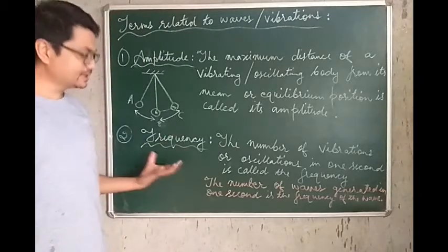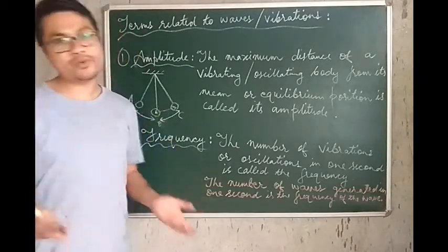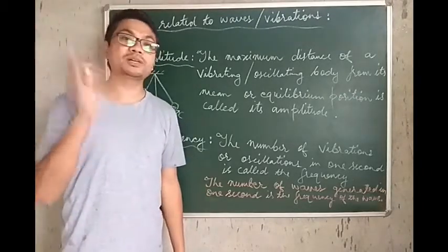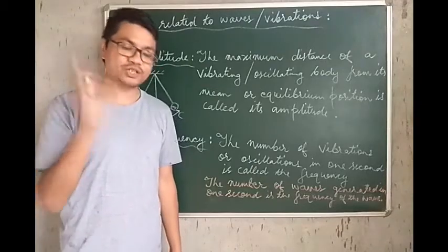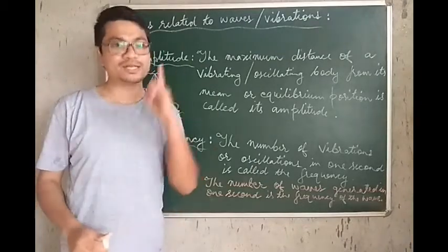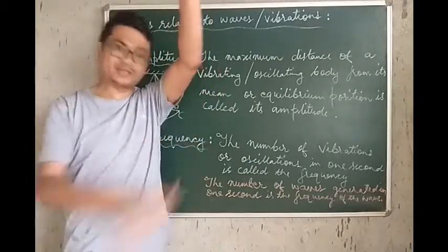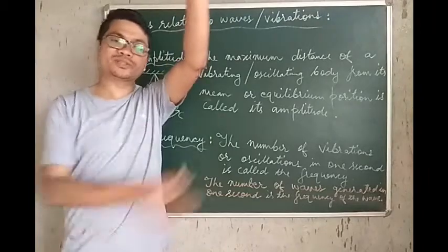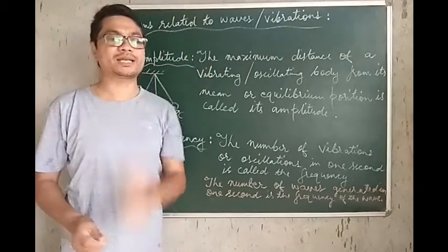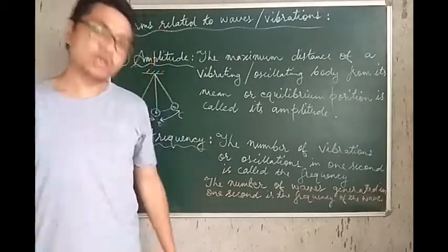The second thing is frequency. For a vibrating body, frequency is the number of complete vibrations in one second. For an oscillating body, the number of complete oscillations in one second is what is called the frequency of oscillation.